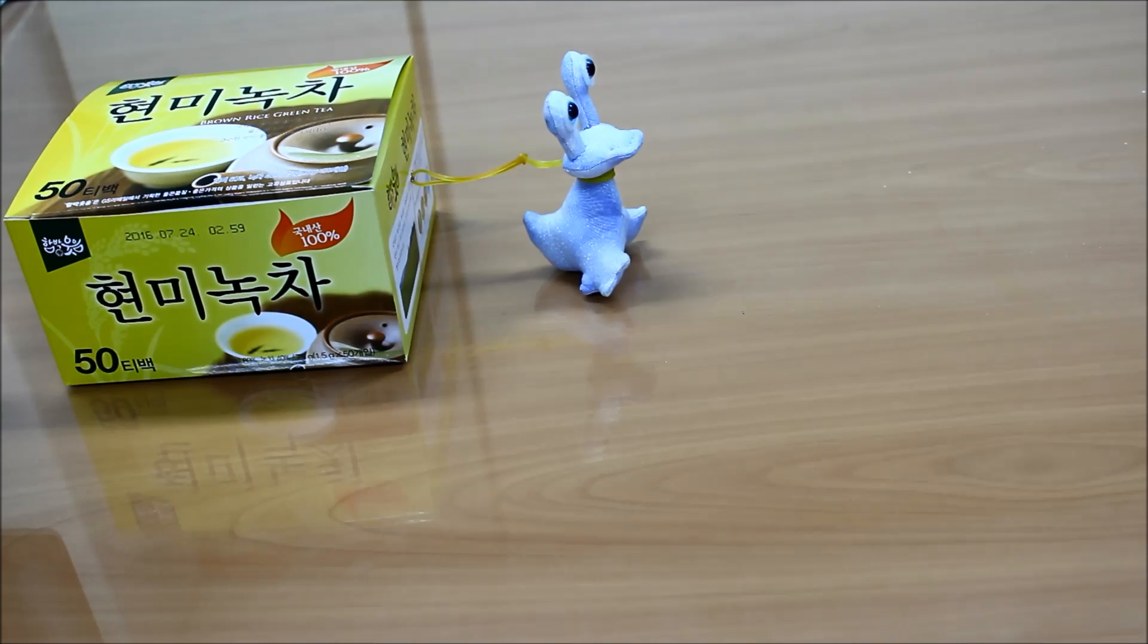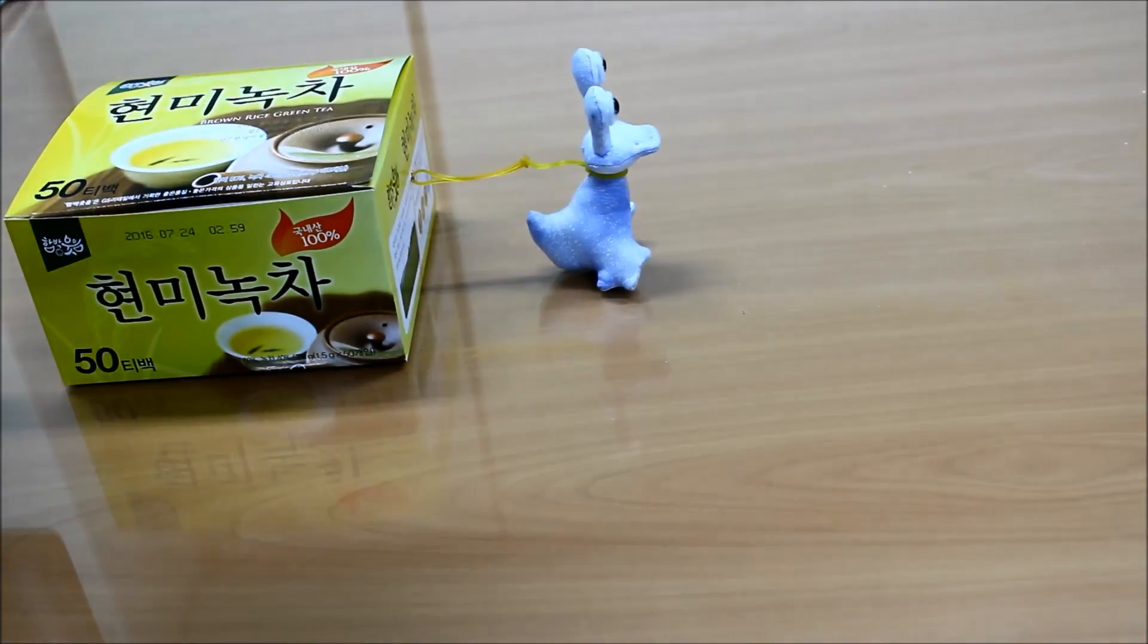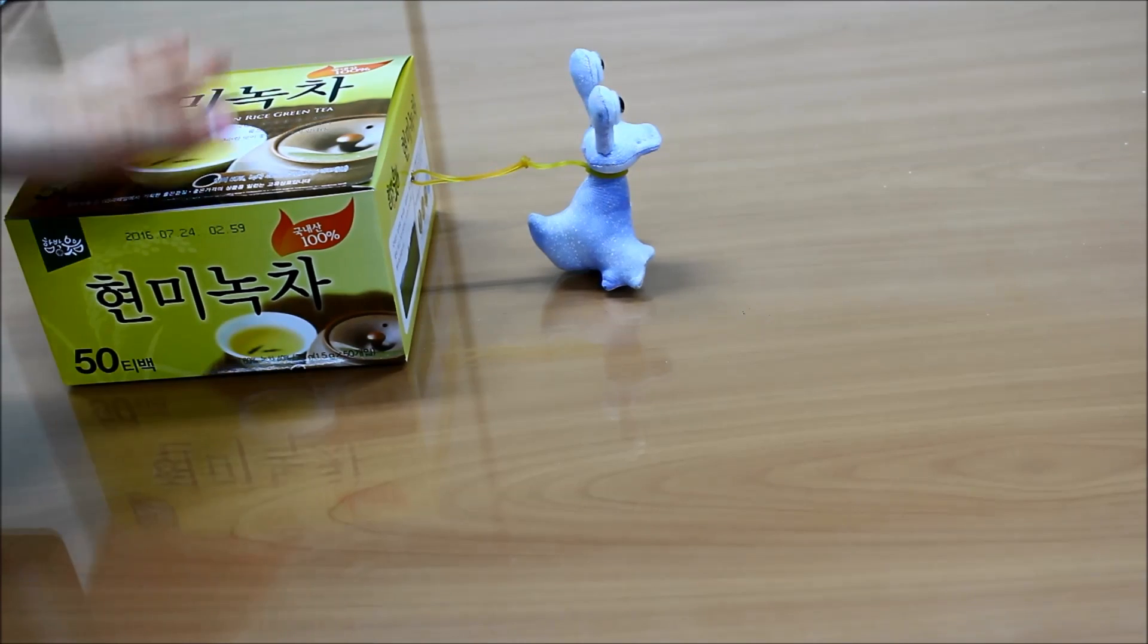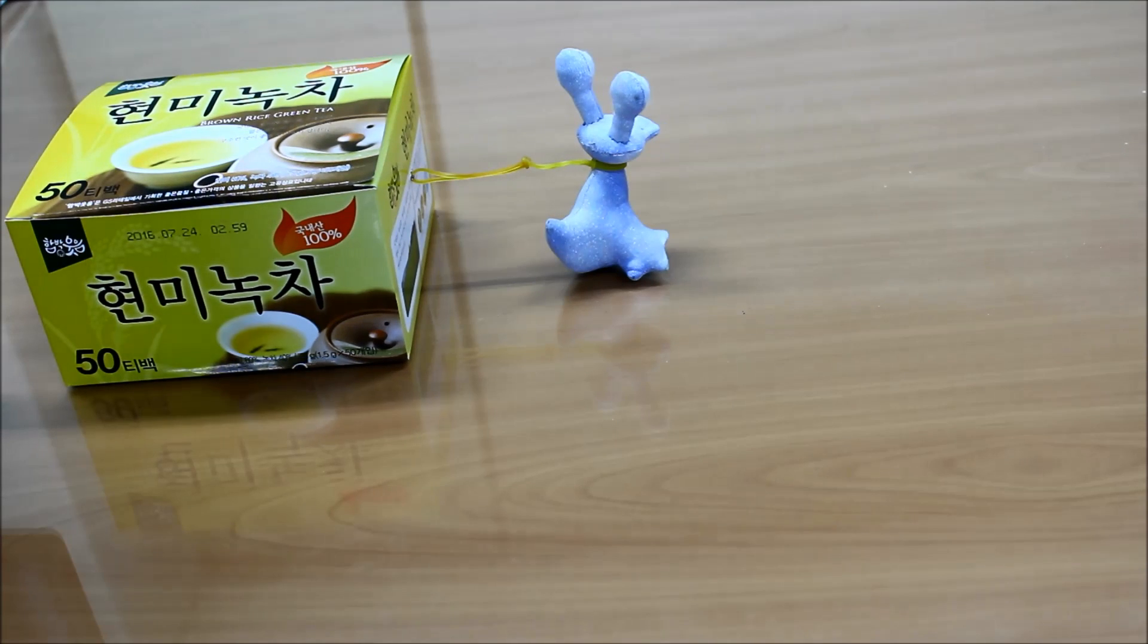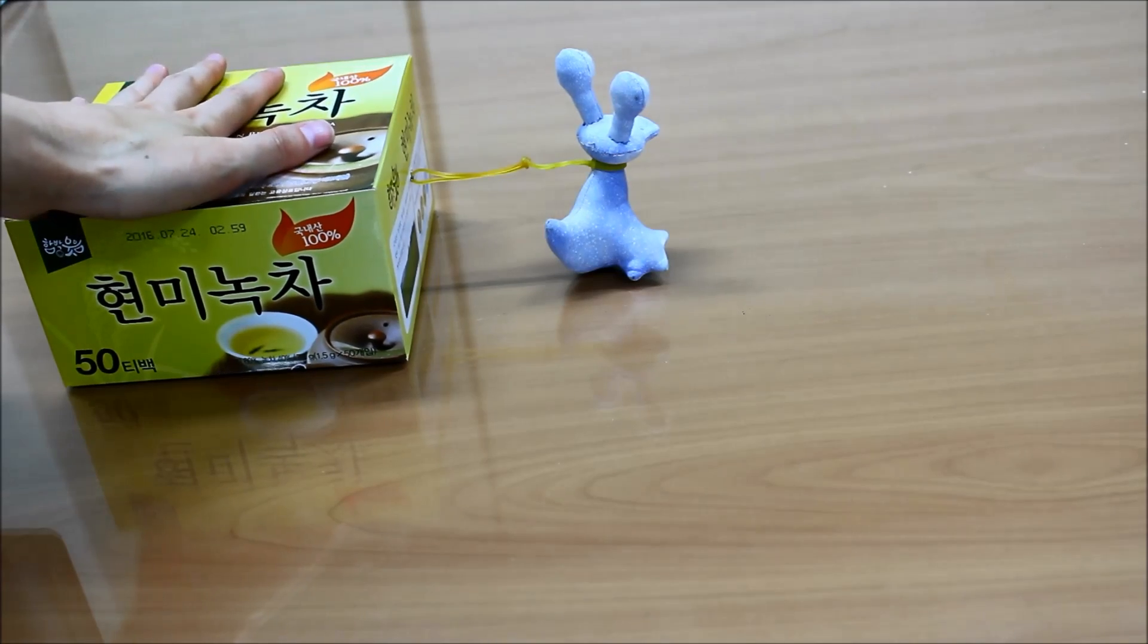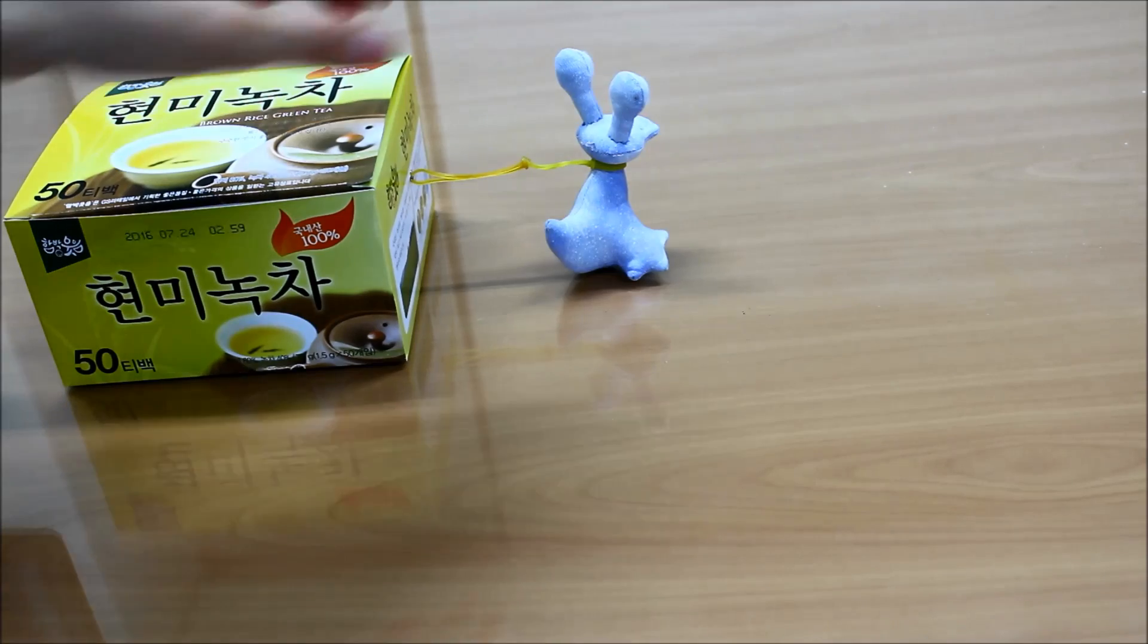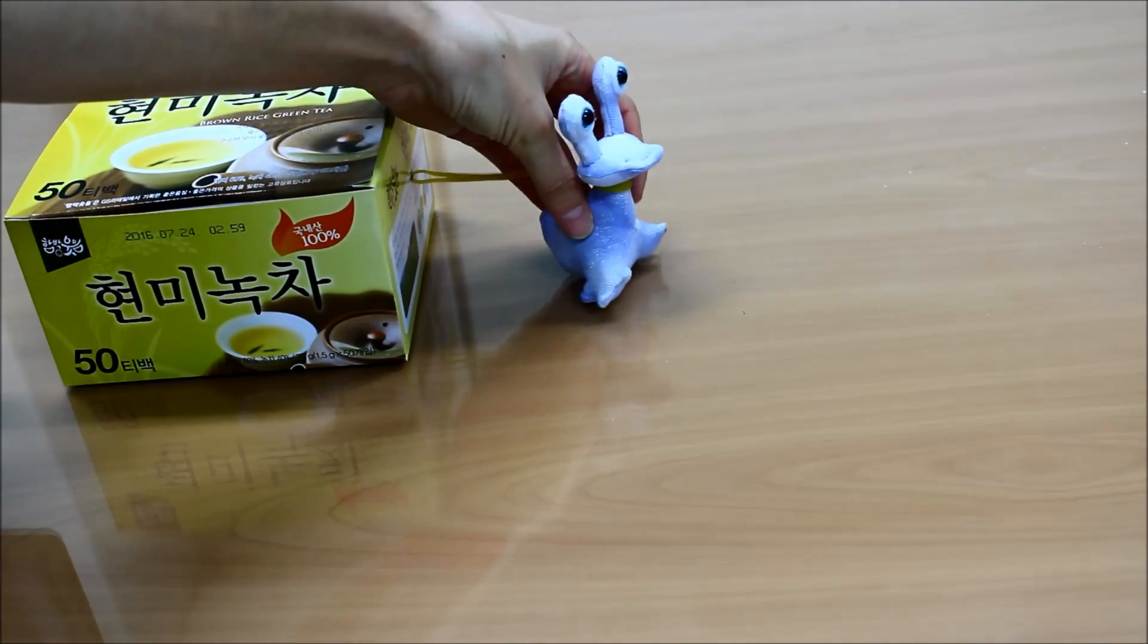And here is our system that we're going to analyze. Yes, it is Valerie attached with a rubber band that we're going to pretend is a spring. I couldn't find a spring. Attached to a box of Hyunminokcha, which is a delicious brown rice green tea, it's my favorite. And we're going to assume that this box is unmovable, so it will not move, and that Valerie is going to be our object here.